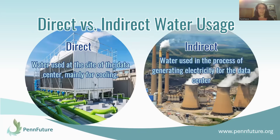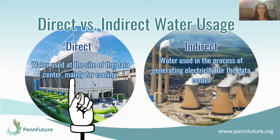So let's talk about data centers and water usage. Water usage from data centers can be broken into two different types. The first is the direct water consumption of a data center, which is the water that's used at the site of the data center — mainly used for cooling. There's also indirect water usage, which is primarily the water used in the process of generating electricity for data centers, occurring at the point where electricity is generated, usually not on site. In this webinar, we're mostly talking about the direct water consumption on site.